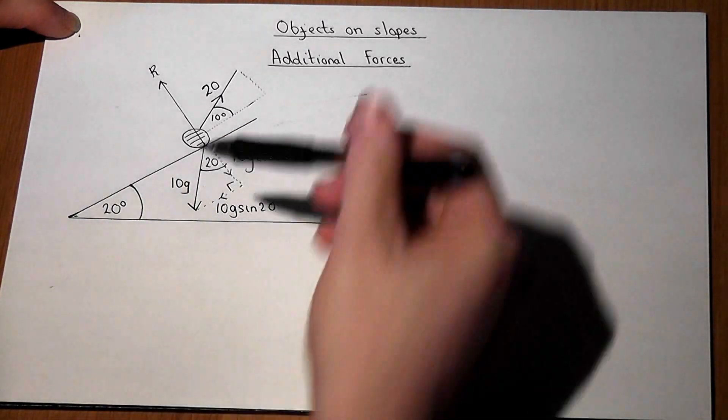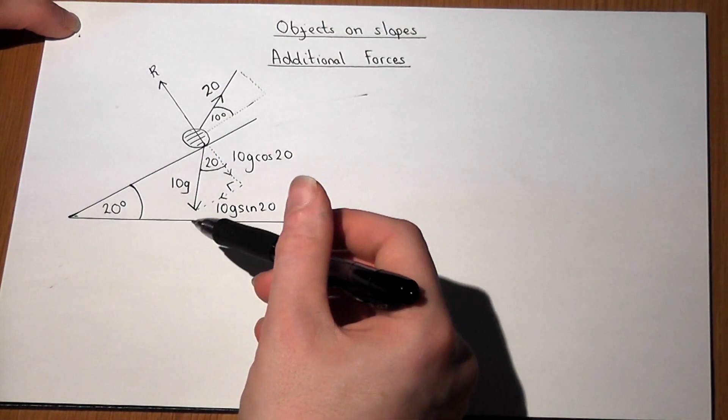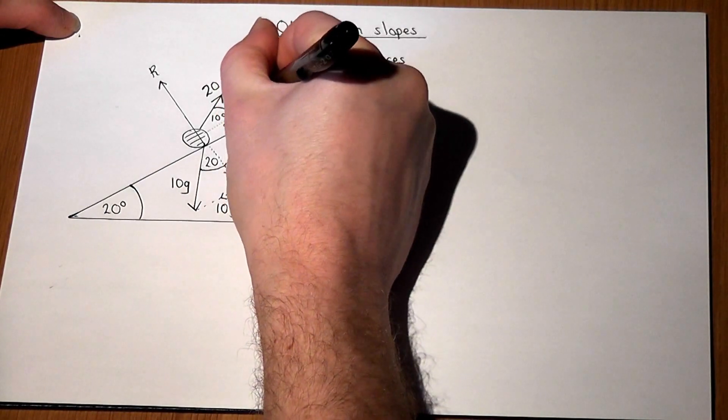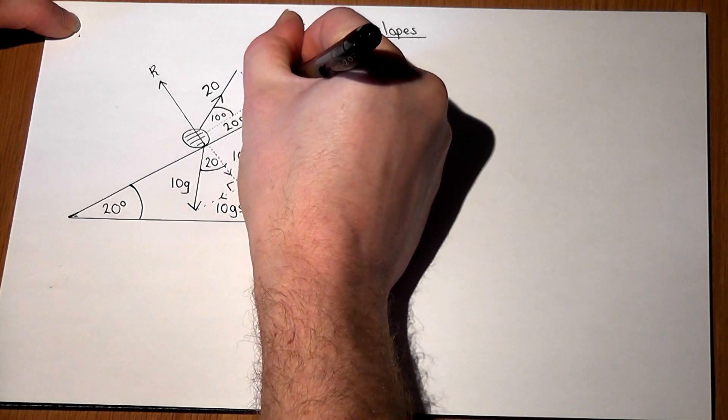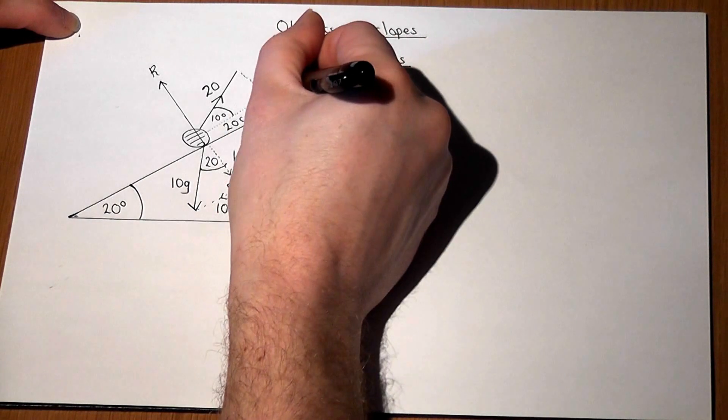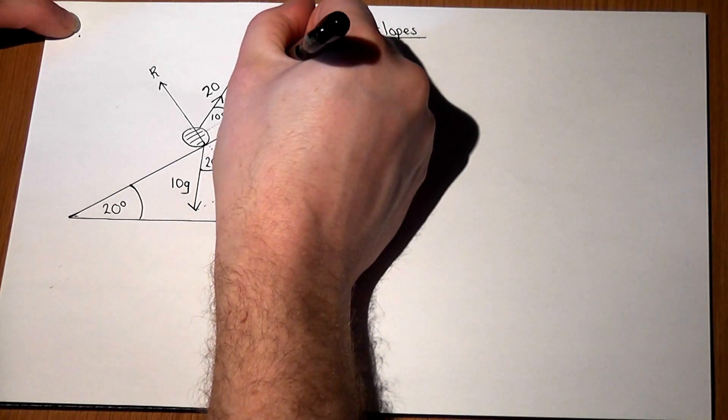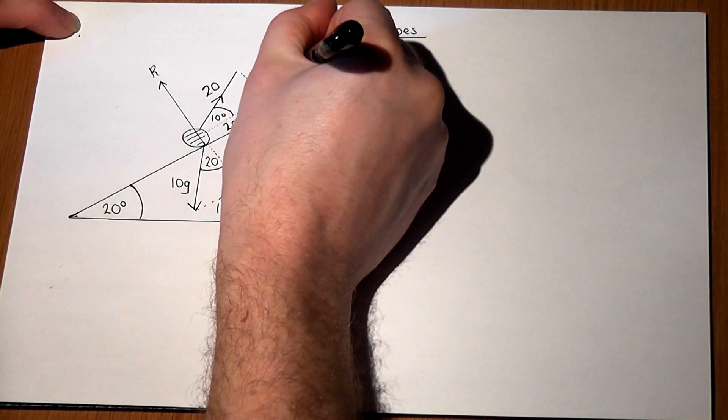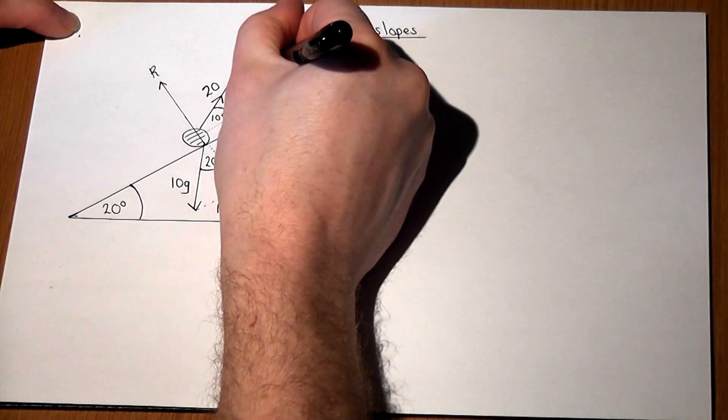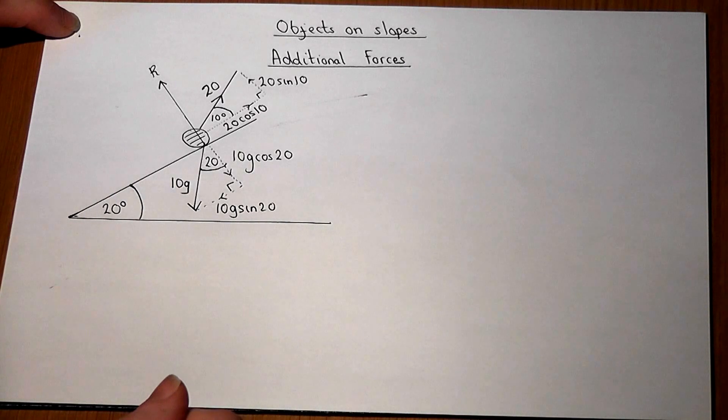However, we must also resolve the tension as well. So we have the adjacent angle, so that will be 20 cos 10, and also the opposite angle, so that will be 20 sin 10. So they're the forces resolved on the diagram into components.